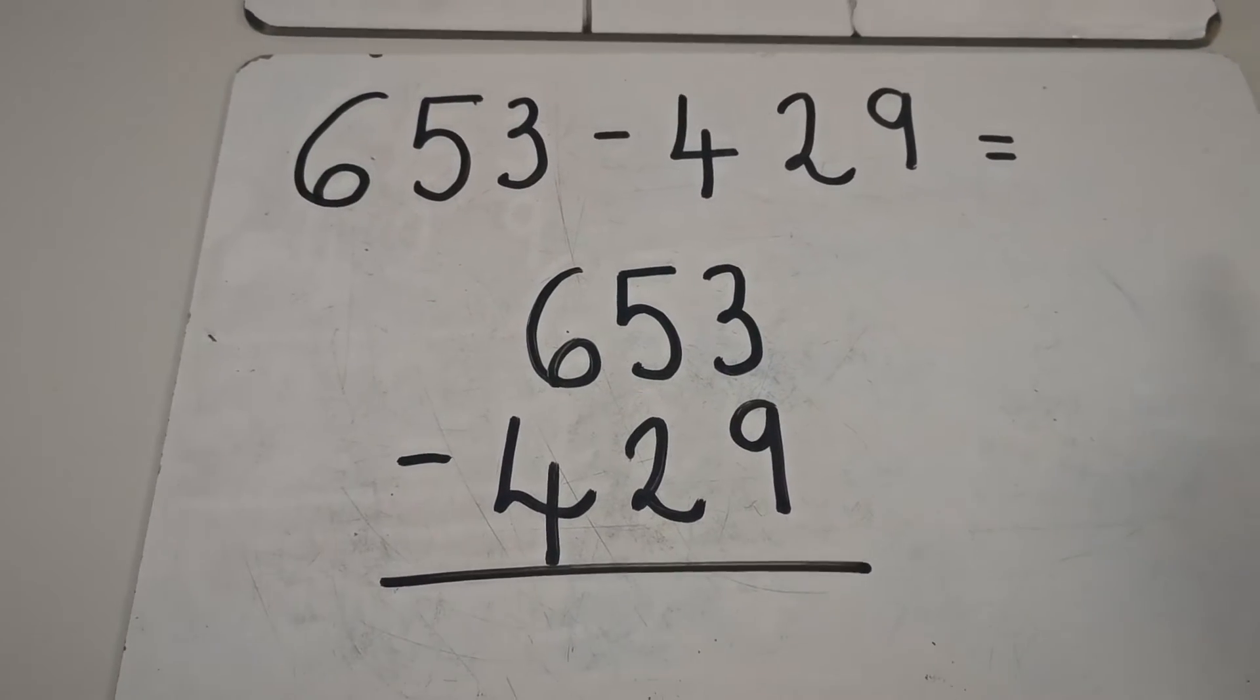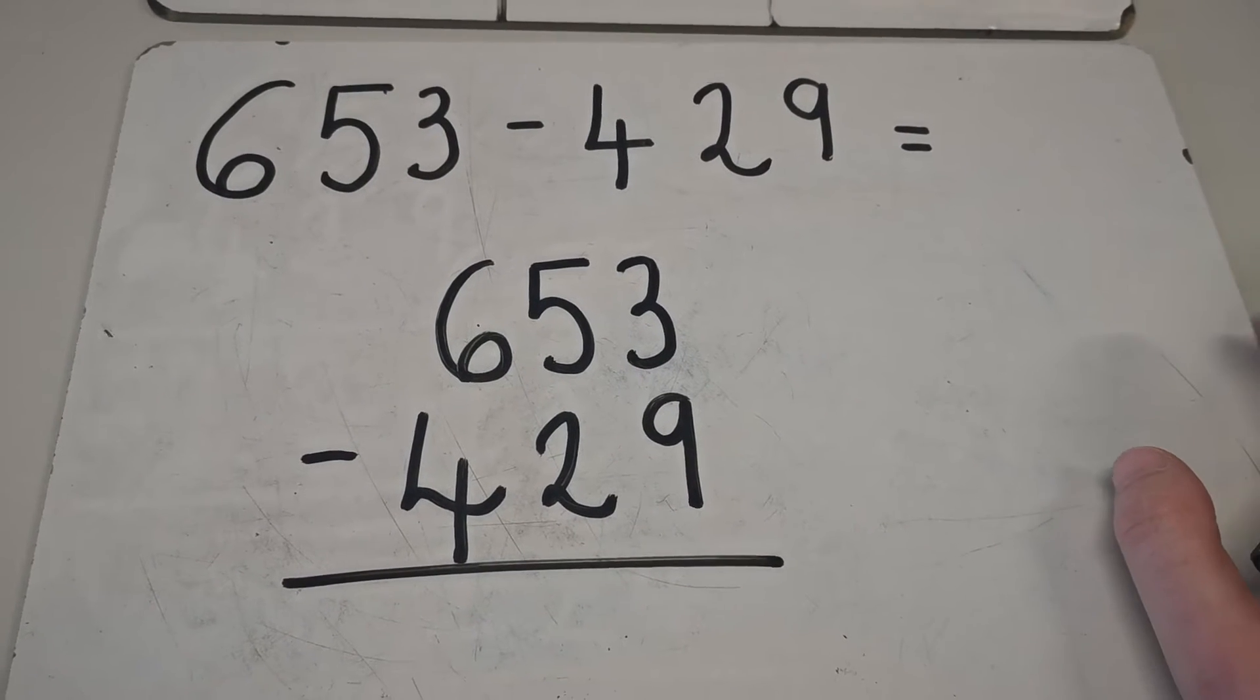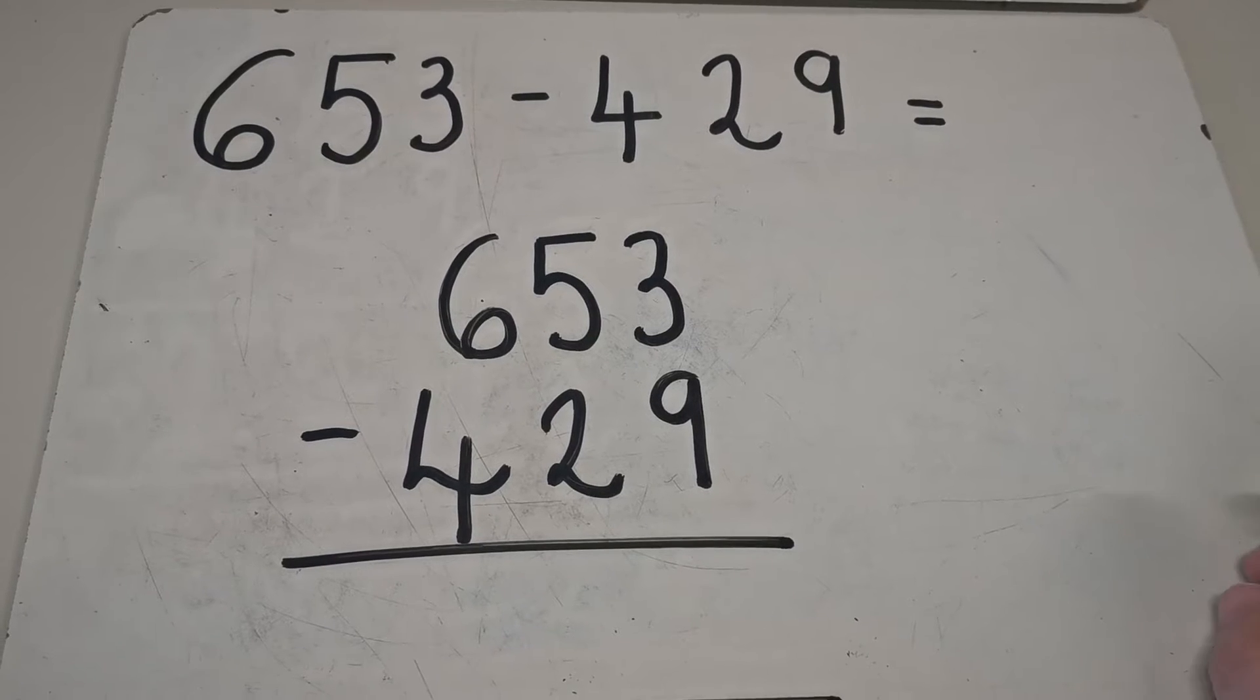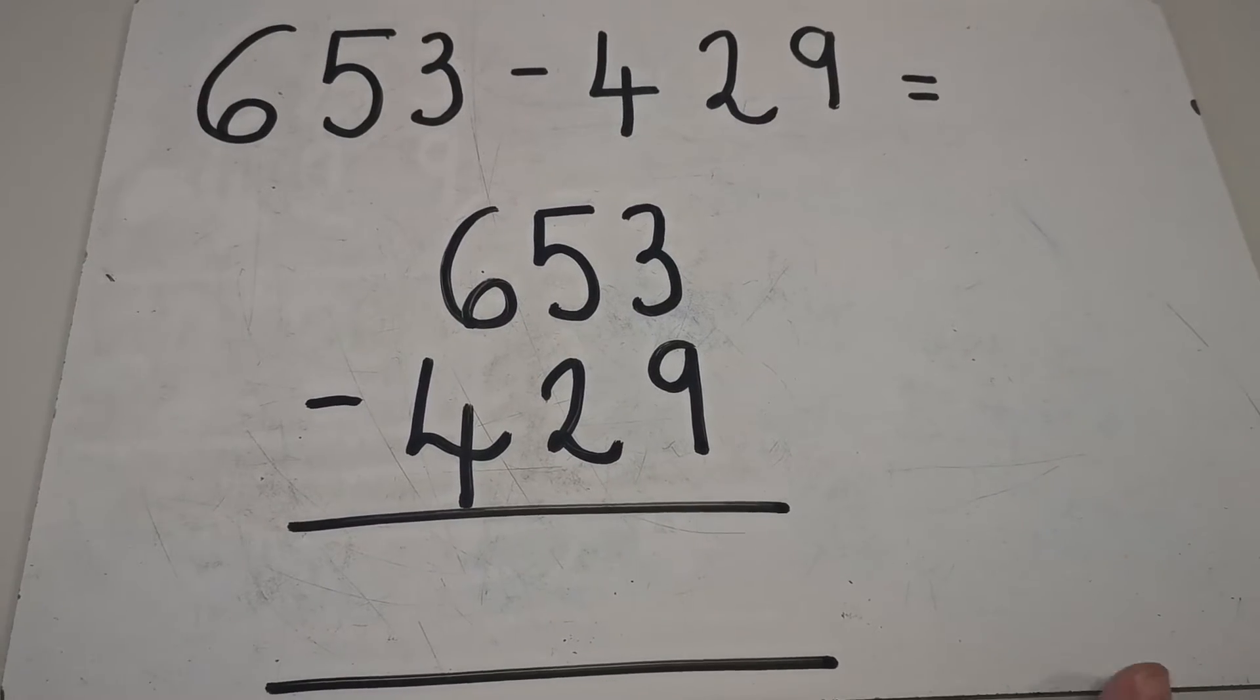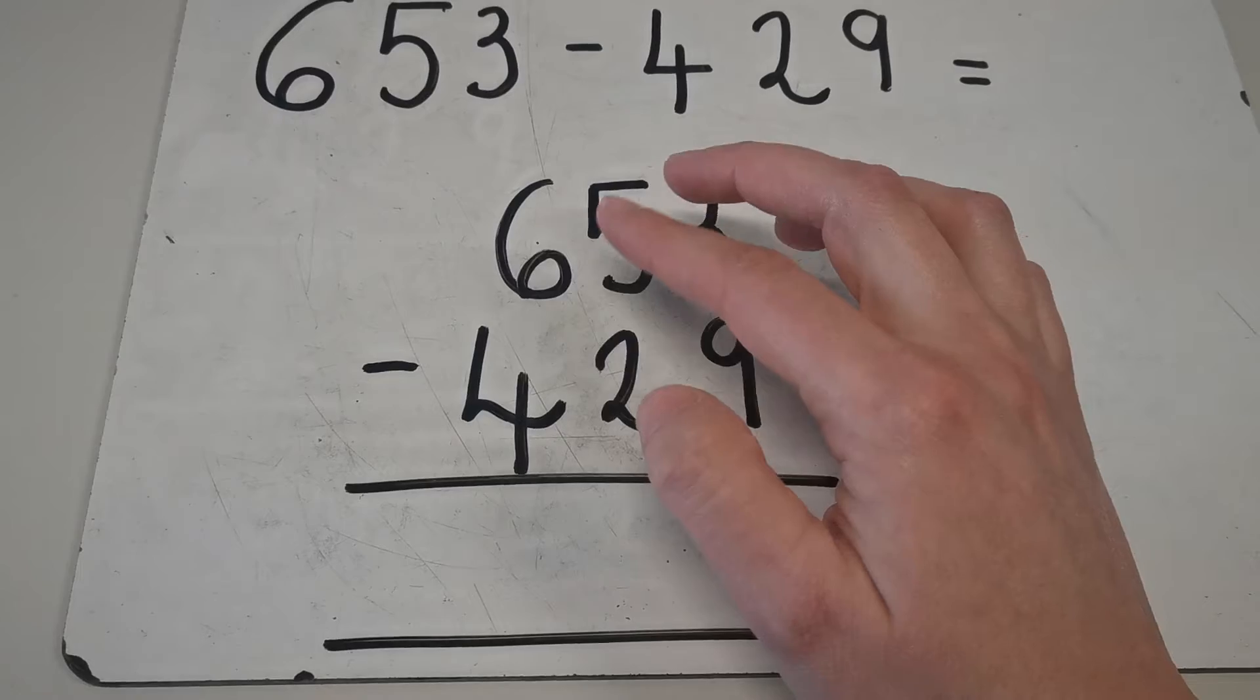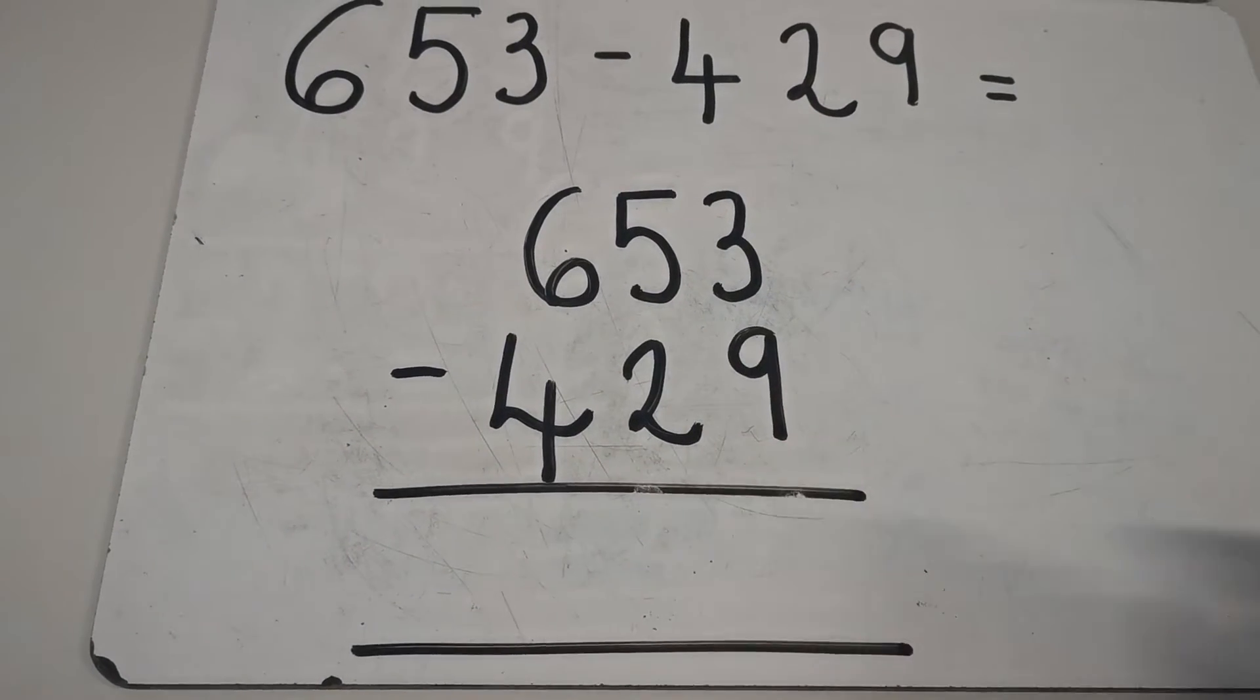So we're going to start by looking at this subtraction. Remember, subtraction is finding how many you've got left. It's about taking it away to find out how many you have left. I'm going to show you place value counters because what we're going to do today is exchange in the tens for ones. Straight away I can see that we cannot subtract 9 from 3 because we don't have enough.